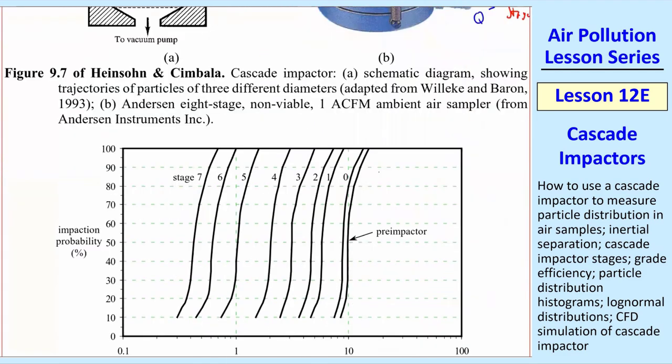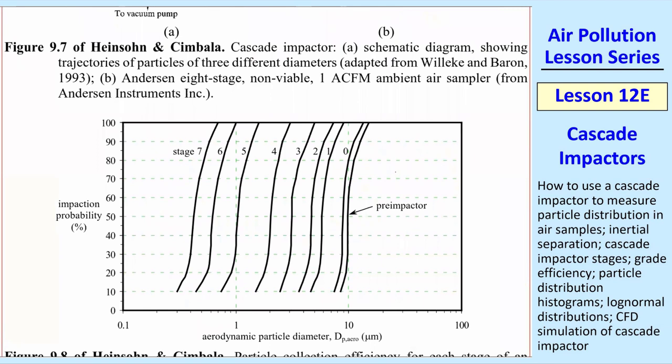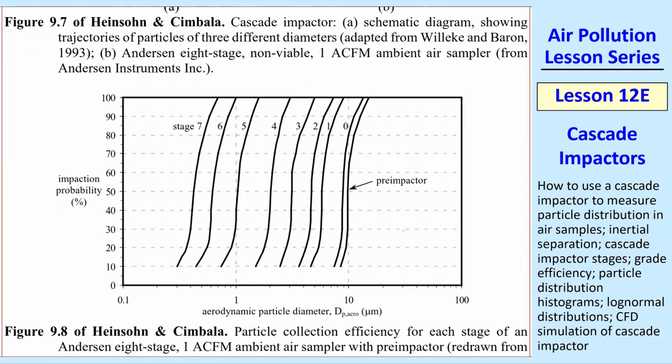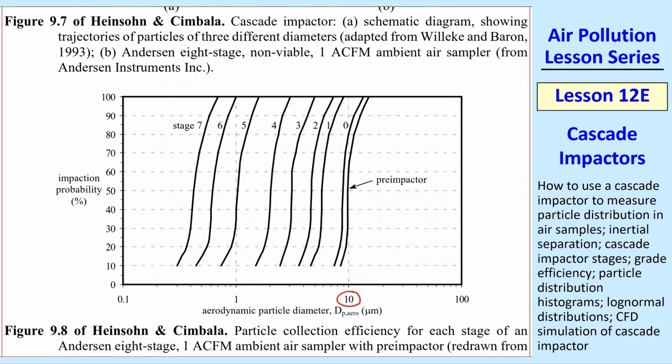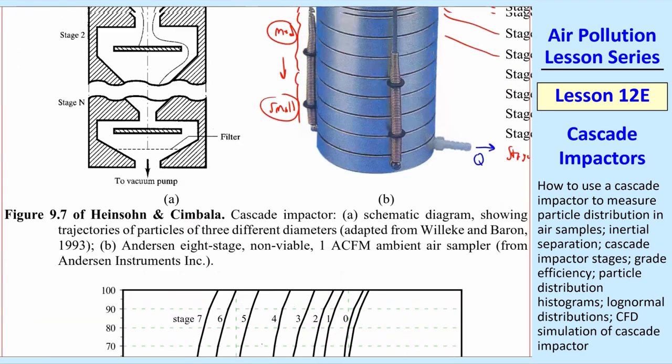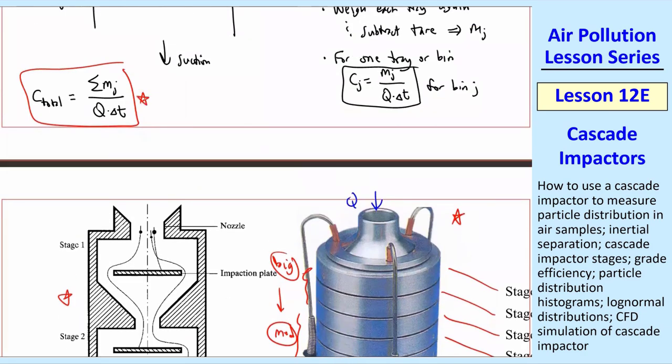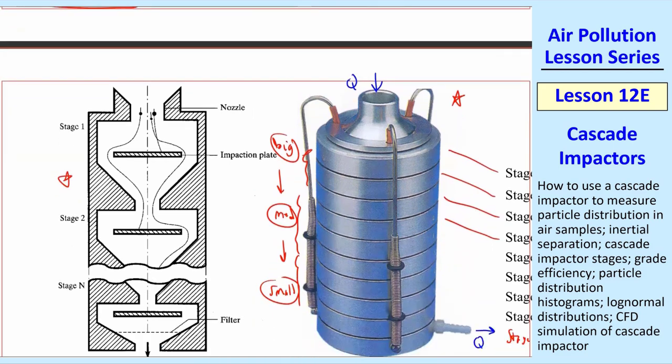Now, if we draw a grade efficiency curve, we can draw these for all these stages. Now, here's a different one that has just eight stages. There's also what's called a pre-impactor, which typically gets rid of some of the really big particles, so they don't clog everything up. This particular one is a PM10 cascade impactor. So if you measure the total mass concentration, this would be PM10 for this cascade impactor.